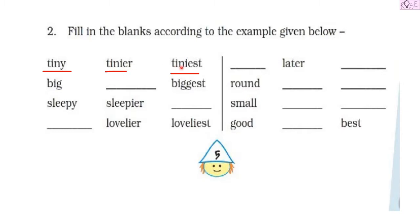Next we have 'big.' For the adjective 'big,' they have already given us the superlative degree — 'biggest.' So we have to change 'big' into the comparative degree. The comparative degree of 'big' will be 'bigger.'